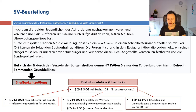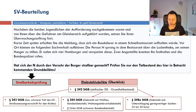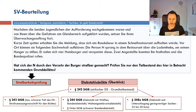§248a ist meines Erachtens ein Diebstahlsdelikt, das sehr oft zur Anwendung kommt. Der Grundtatbestand des §242 ist drin, aber dieser Diebstahl bzw. die Unterschlagung bezieht sich auf geringwertige Sachen. Die Geringwertigkeitsgrenze wird von den Gerichten festgelegt – Pi mal Daumen 25 bis 50 Euro. Bei den vier Burgern – ca. 4 mal 2 Euro, also 8 Euro – sind wir unter dieser Grenze, aber wir sollen §248a hier nicht prüfen. Das Grunddelikt ist §242.